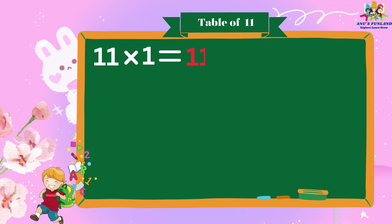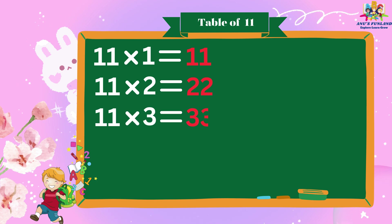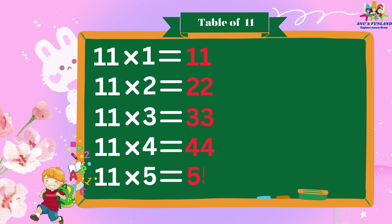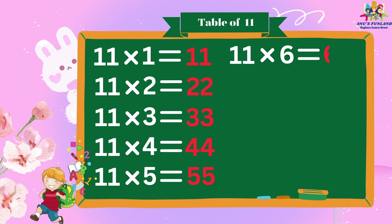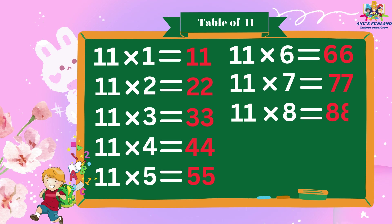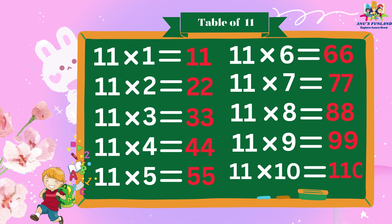11 times 1 is 11, 11 times 2 is 22, 11 times 3 is 33, 11 times 4 is 44, 11 times 5 is 55, 11 times 6 is 66, 11 times 7 is 77, 11 times 8 is 88, 11 times 9 is 99, 11 times 10 is 110.